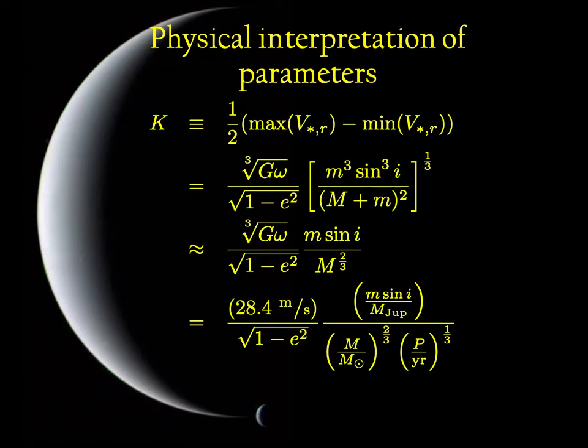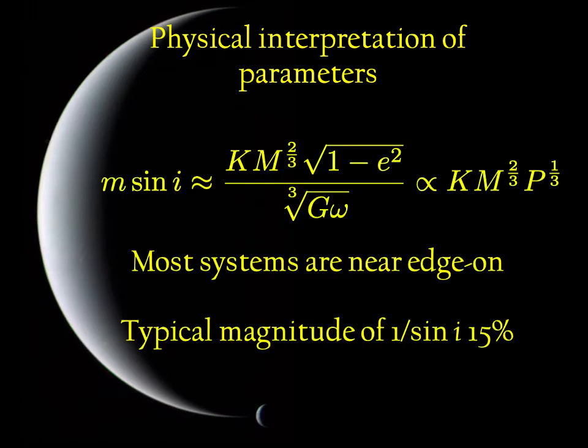So if we make that approximation just for illustrative purposes, we see that the semi-amplitude plugging in some characteristic numbers. So if you have a one Jupiter-mass planet around a one solar-mass star in a circular orbit with a one-year period, its amplitude is 28.4 meters per second. Real Jupiter has an eccentricity of about 5% or so. So we can basically neglect it here. Its period, though, is 12 years. And so when you take 12 to the one-third and divide it out, you get about 12 meters per second for Jupiter.